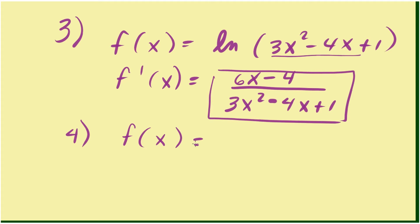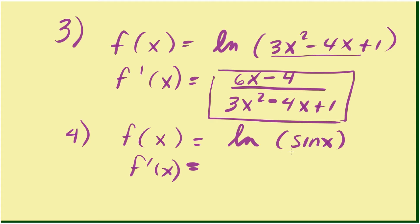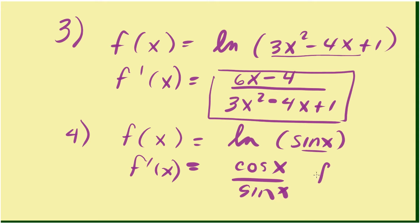Number 4: how about finding the derivative of natural log of sine x? F prime of x is going to be the derivative of sine x, which is cosine x, over that same sine x. Now if you recall the trig identity, cosine x over sine x is just equivalent to cotangent x.